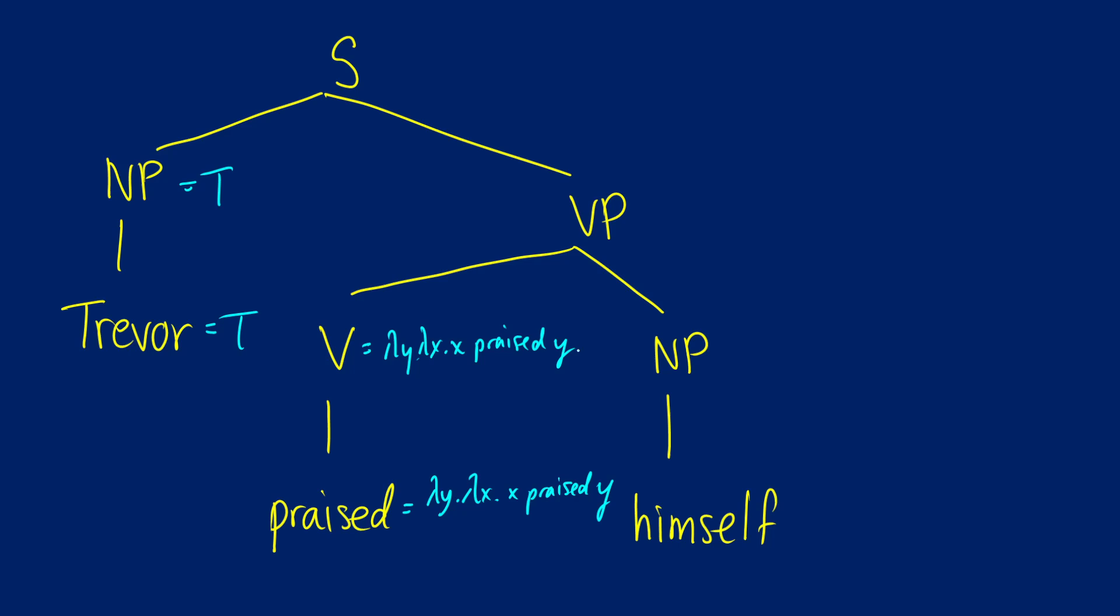And now let's see himself. So we said that himself is going to be lambda P lambda X dot P X X. And we're going to move this up the tree, and we're going to see how this applies. So we're going up here.